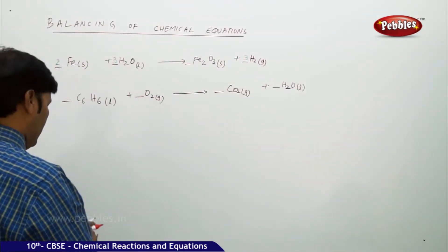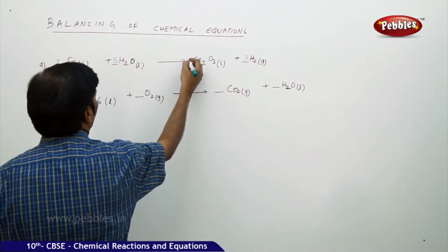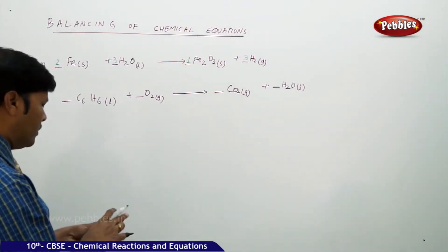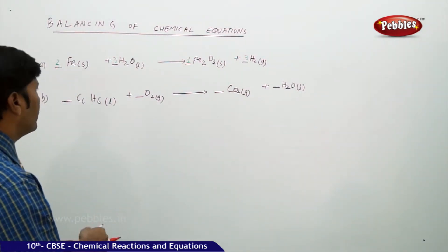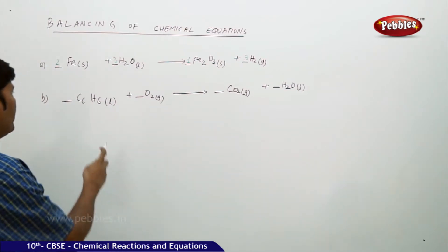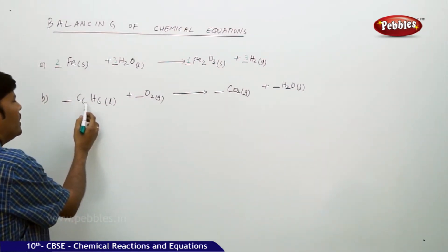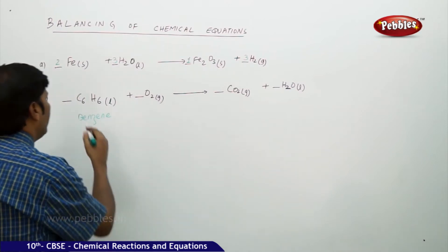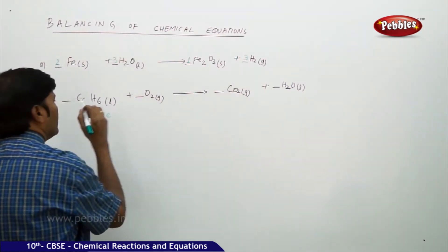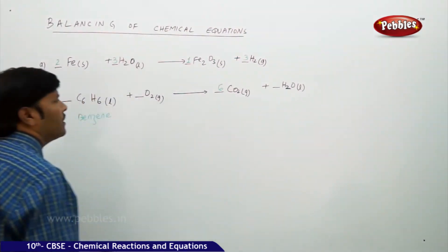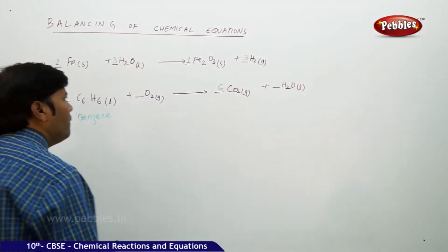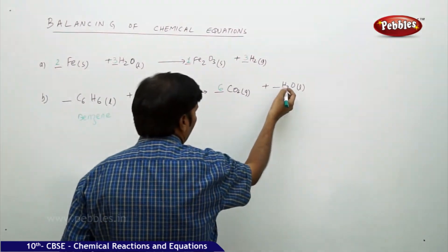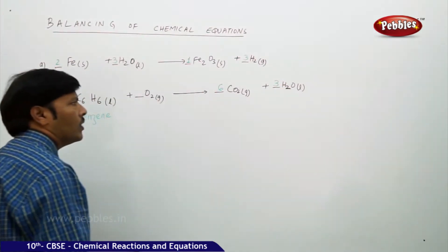In benzene we have 6 carbons, but in CO₂ there is only one carbon, so I am going to place the molar coefficient 6 beside carbon dioxide. Now for hydrogens: in benzene we have 6 hydrogens, but H₂O has only 2 hydrogens, so mark 3 beside H₂O. The number of hydrogens are now balanced.